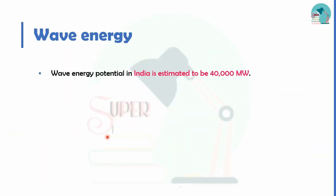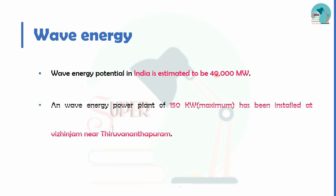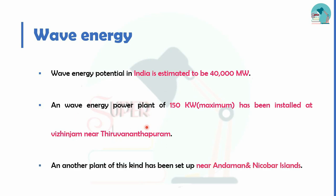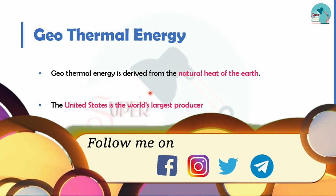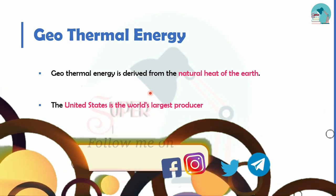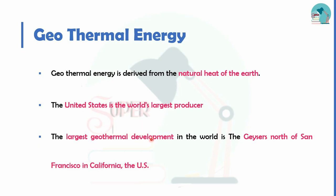In India, there is an estimated 40,000 MW of tidal energy potential, with 15,000 kW installed in Sundarbans. Next is geothermal energy, which is derived from the natural heat of the Earth. The US is the largest producer, and the largest geothermal development is in California.